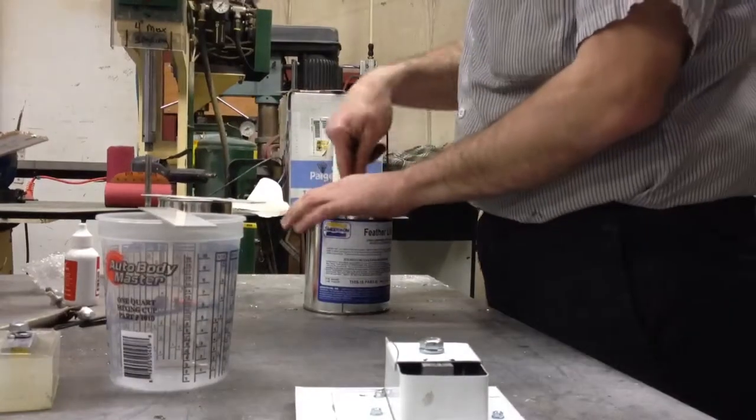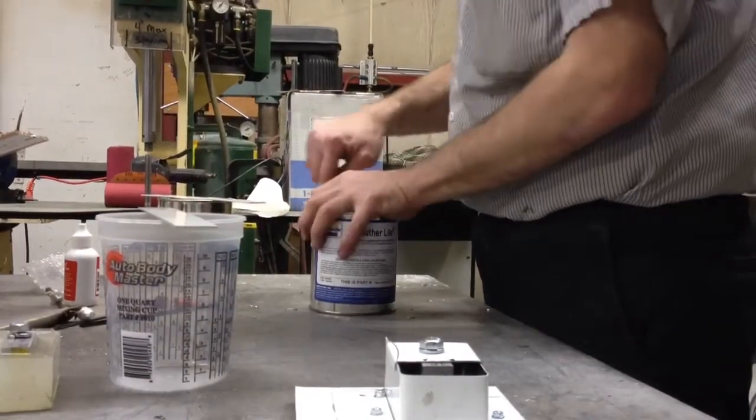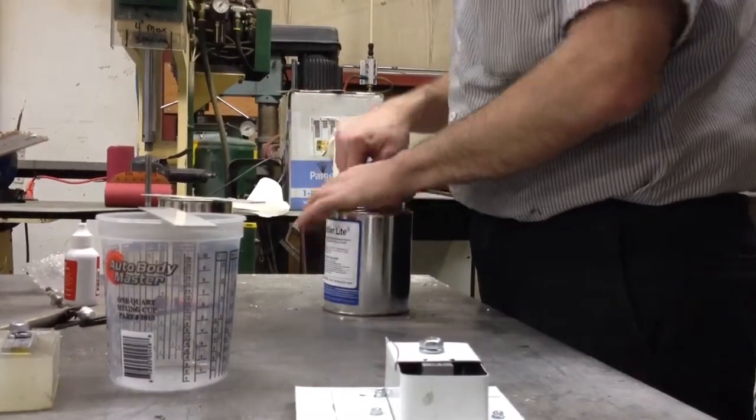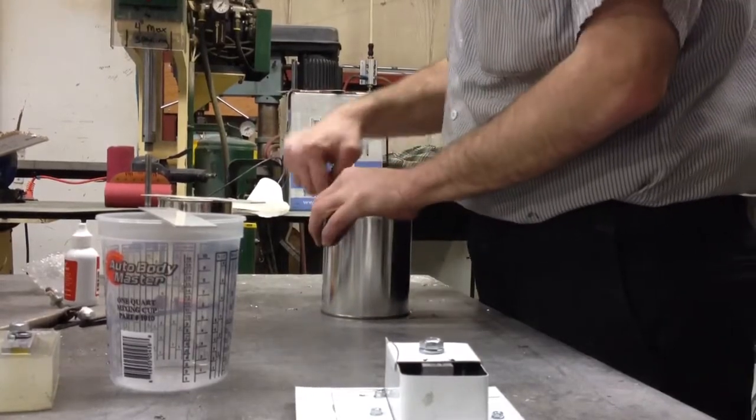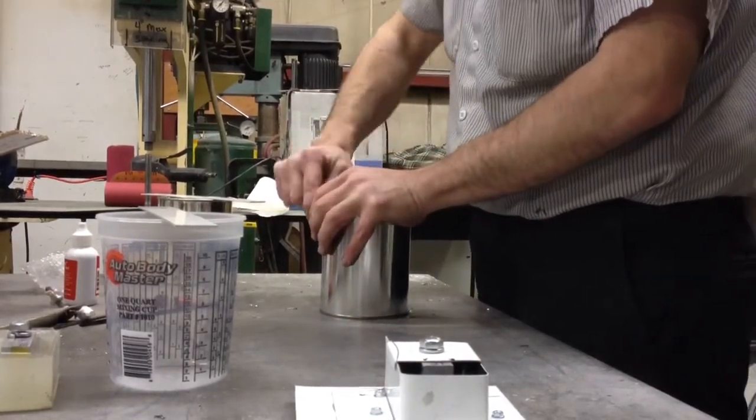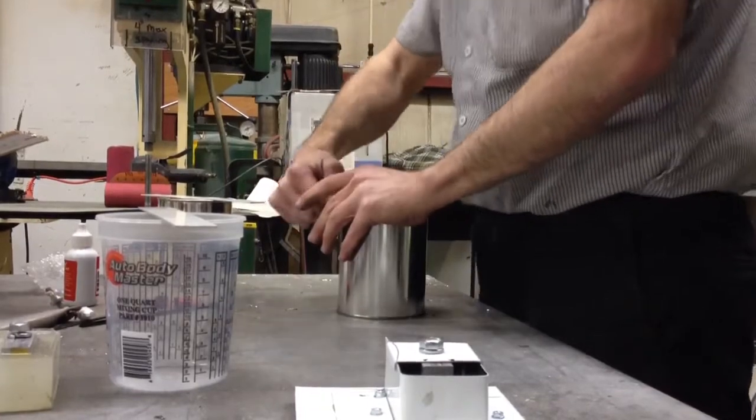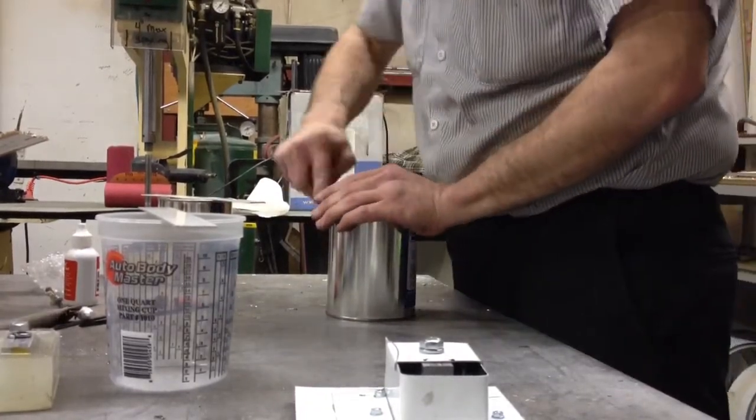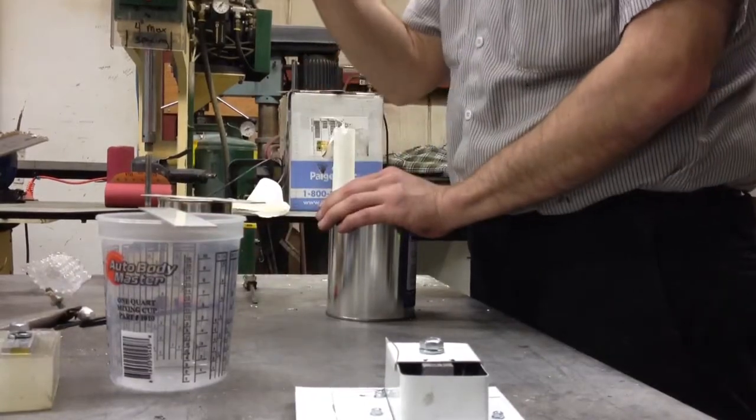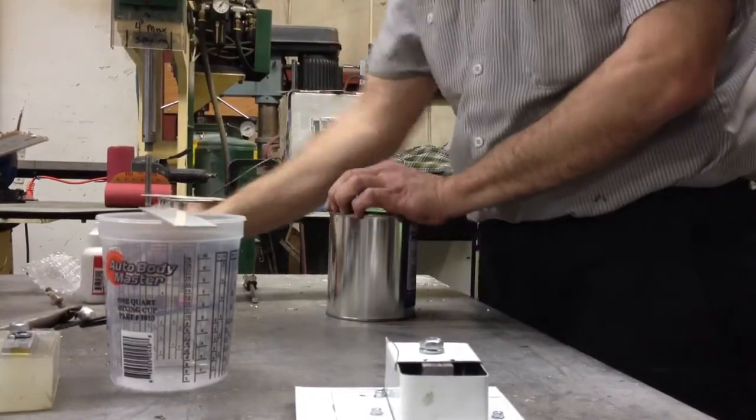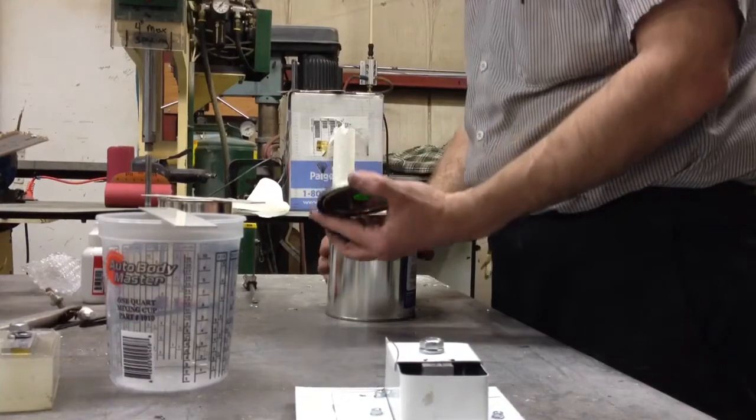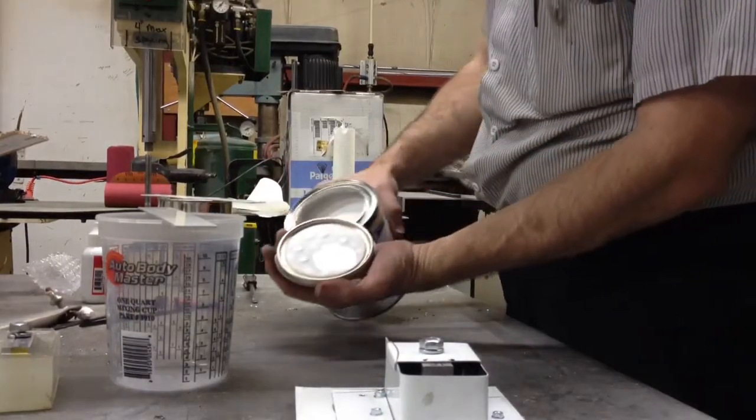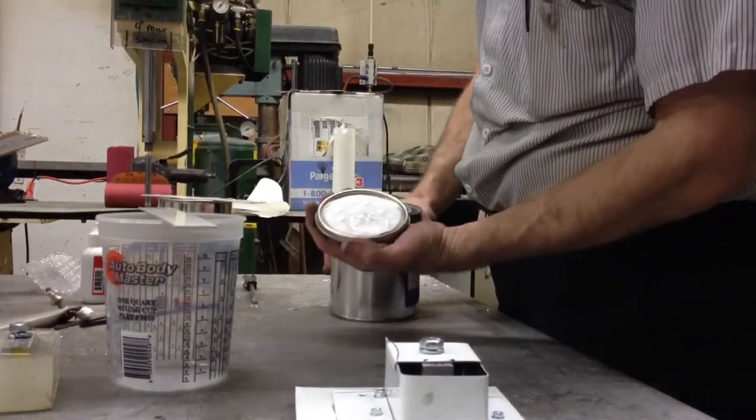So without any more further ado, I'm going to mix these up without shaking it this time. And perhaps I'll have better results. Which is this? This is part B. Which I'm supposed to mix pigment into part B. Interesting. It's got a white color to it. It looks pretty firm.